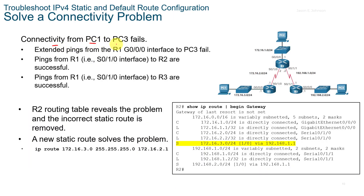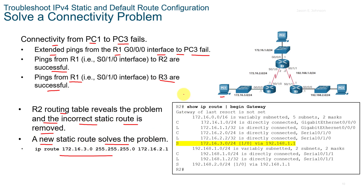If connectivity from PC1 to PC3 fails, you can use extended pings from R1. If extended pings from R1 to PC3 fail but pings from R1 to R2 and R1 to R3 are successful, the R2 routing table reveals the problem. An incorrect static route is removed, a new correct static route is added to solve the problem, and this is visible in the show IP route output on the right-hand side.